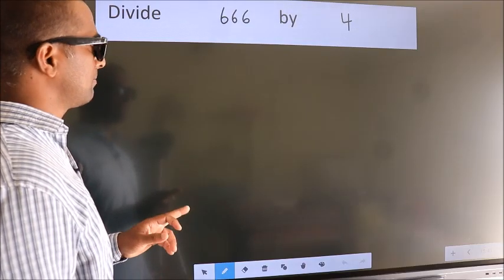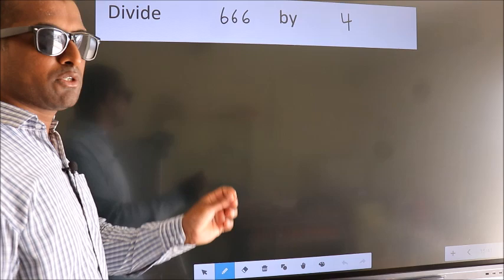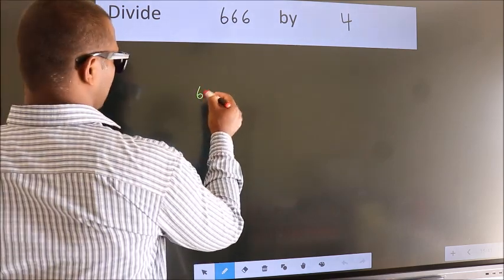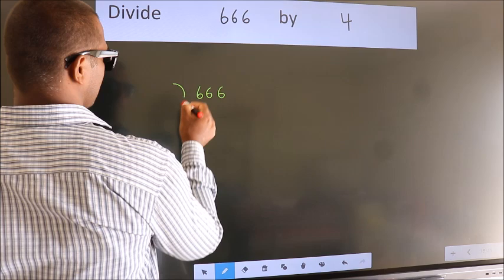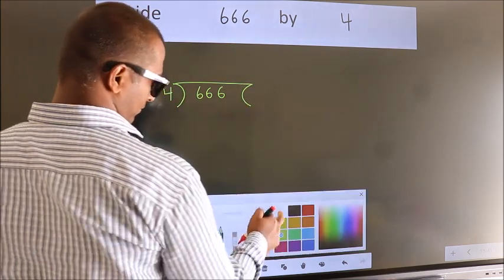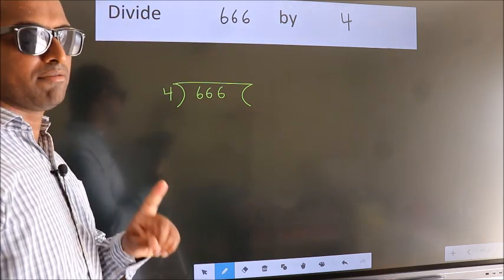Divide 666 by 4. To do this division we should frame it in this way. 666 here, 4 here. This is your step 1.